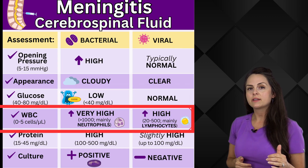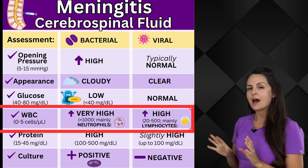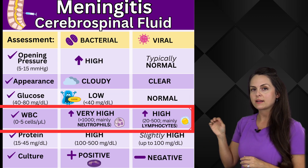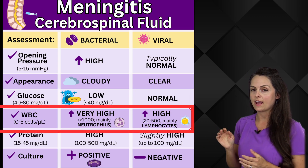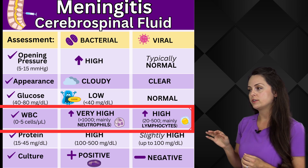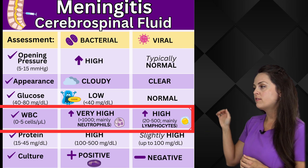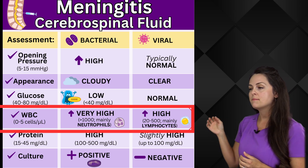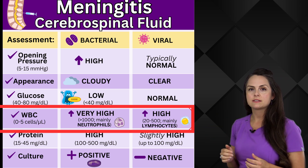White blood cell count is going to be high in both. With bacterial, it's going to be very high and it's mainly going to be neutrophils in there. With viral it will be high, mainly lymphocytes.